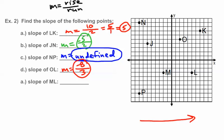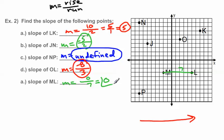The last problem: find the slope from M to L. M equals rise over run. The rise between M and L — I'm not going up or down at all, so the rise is 0. The run is 7. Zero divided by any number always equals 0, so this is a slope of 0.